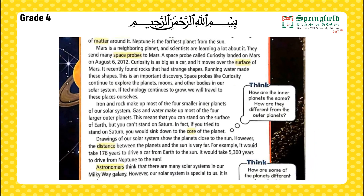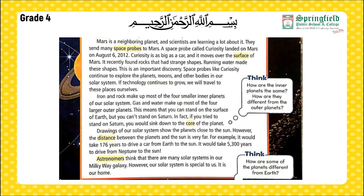Mars is a neighboring planet and scientists are learning a lot about it; they send many space probes to Mars. A space probe called Curiosity landed on Mars on August 6, 2012. Curiosity is as big as a car and it moves over the surface of Mars. It recently found rocks with strange shapes — running water made these shapes.